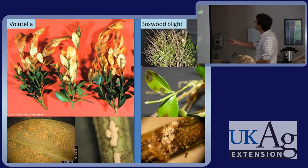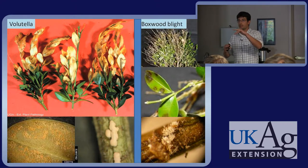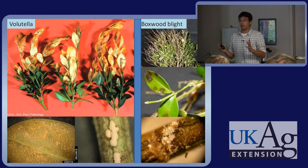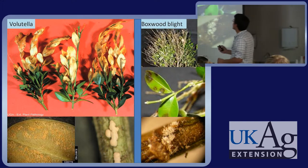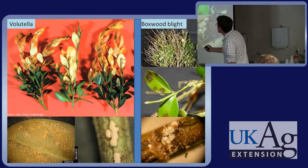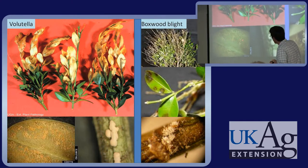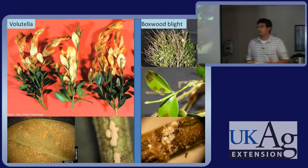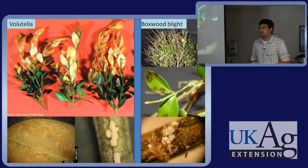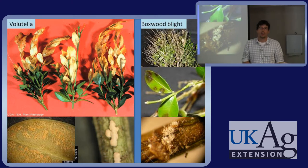Volutella is the most common thing you'll ever see on boxwood — if you clip leaves and wait a few weeks it'll appear, possibly as an endophyte that's always present. It produces dried, crusty orange-yellowish sporulation. Plants with volutella retain their leaves compared to boxwood-blight-infected plants that defoliate rapidly. Heavy scouting will mean encountering a lot of volutella, so it's important to distinguish it from the white stellate sporulation of boxwood blight.